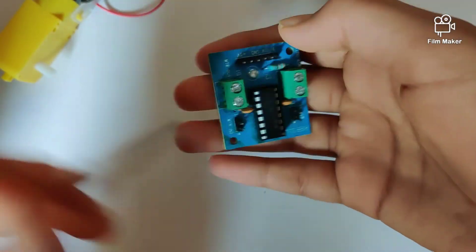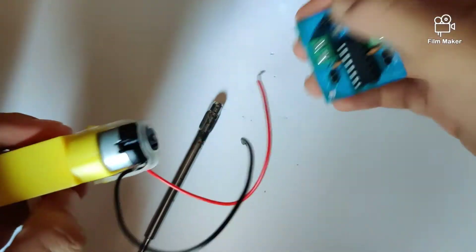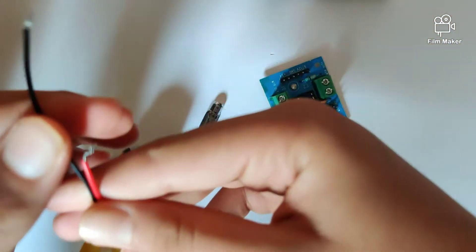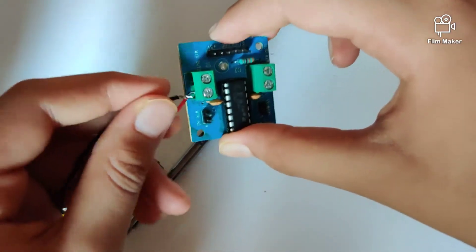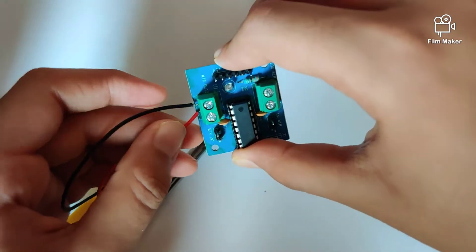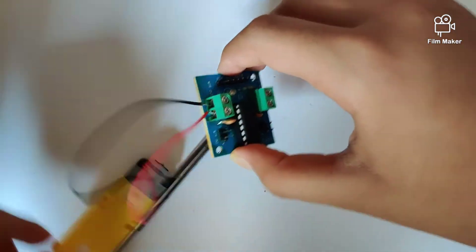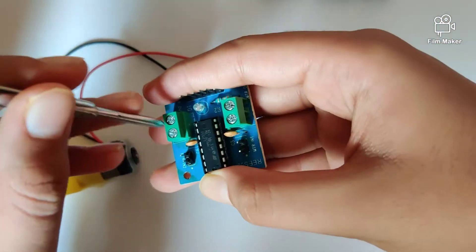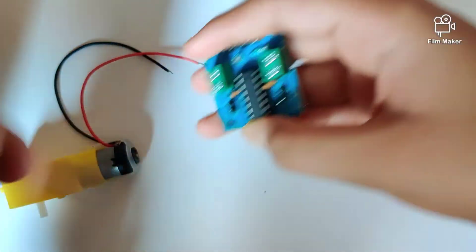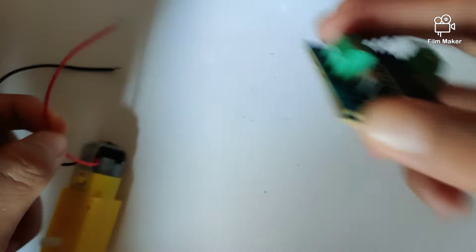So this is a motor, and the two wires are connected and plugged into our module like that. Once we've done that, we use the screwdriver to stabilize the connection.